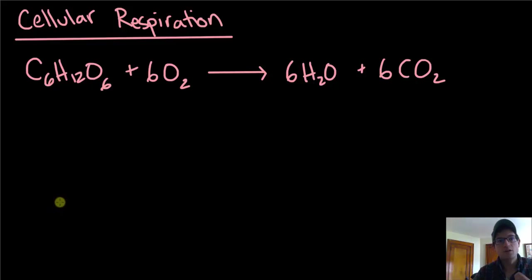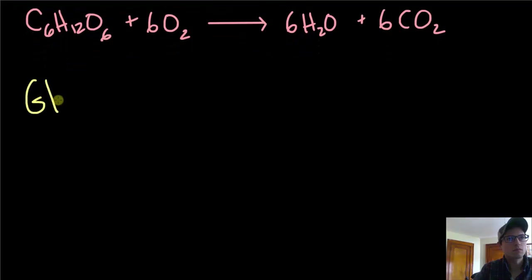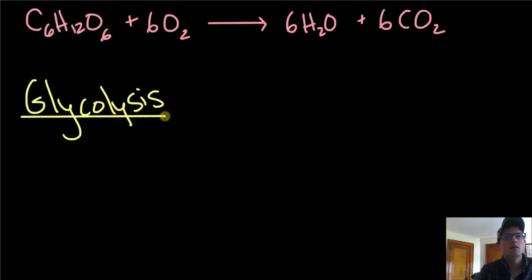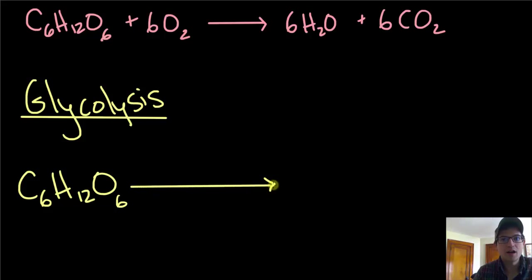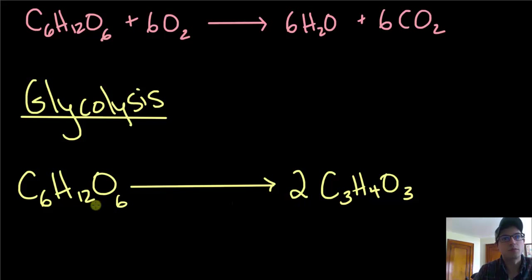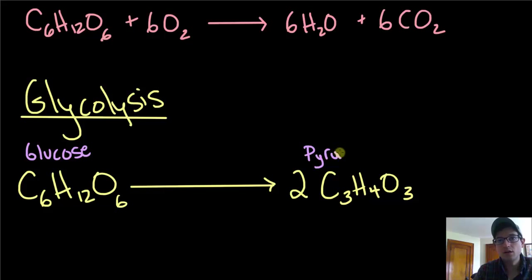Let's start with the process of glycolysis, which means sugar breaking. We're starting with our sugar — one molecule of glucose, C6H12O6. In the process of glycolysis, we're going to be modifying this glucose over a series of steps, each step catalyzed by an enzyme. The result is that we end up with two molecules of a 3-carbon molecule called pyruvate, which is C3H4O3. Glucose is our starting material, and by the end of glycolysis, we have pyruvate.